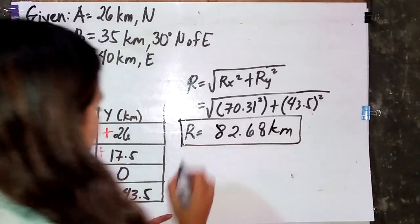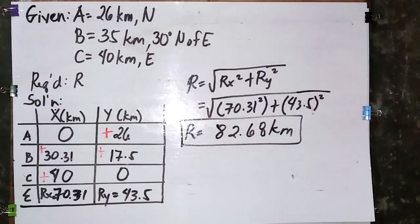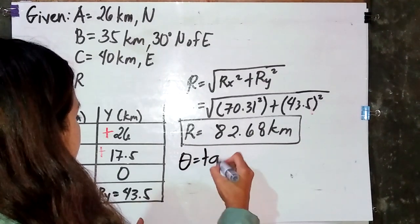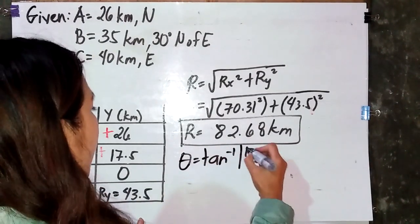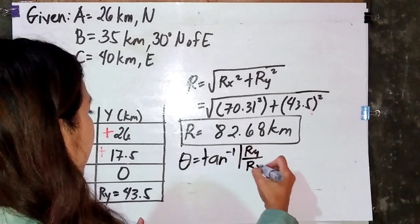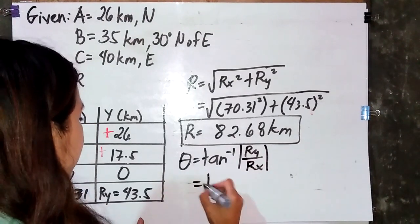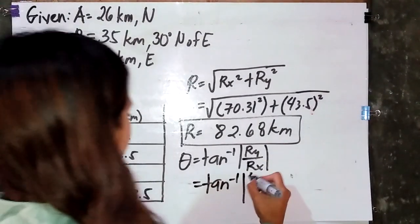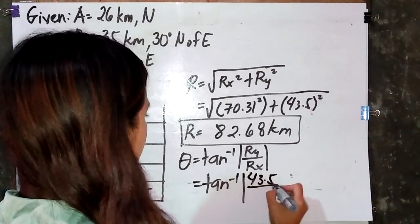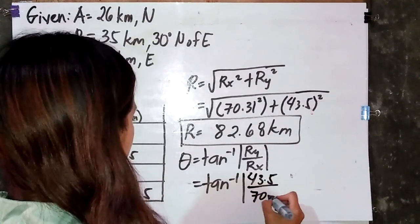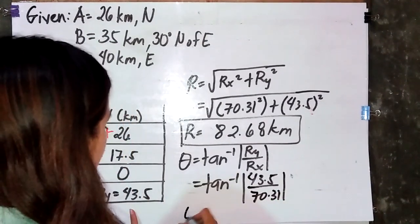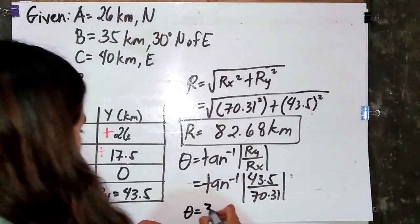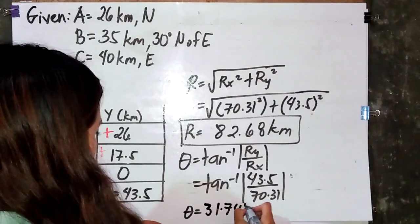Now for the direction of the resultant, using the formula theta equals tan inverse of Ry over Rx, we substitute: tan inverse of 43.5 divided by 70.31. Our angle is 31.74 degrees.